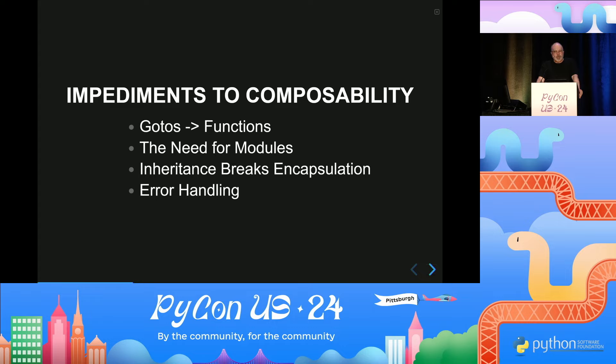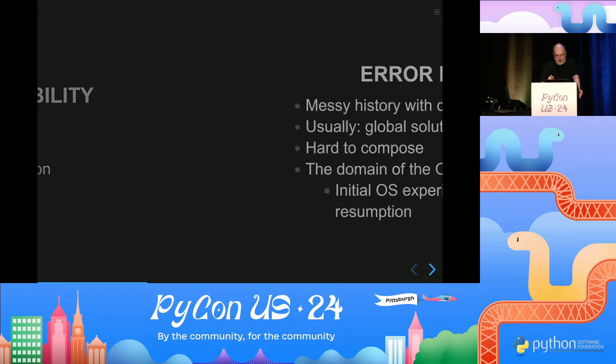Inheritance, it turns out, is an impediment to composability because it breaks encapsulation. And then finally, the topic of today: error handling.